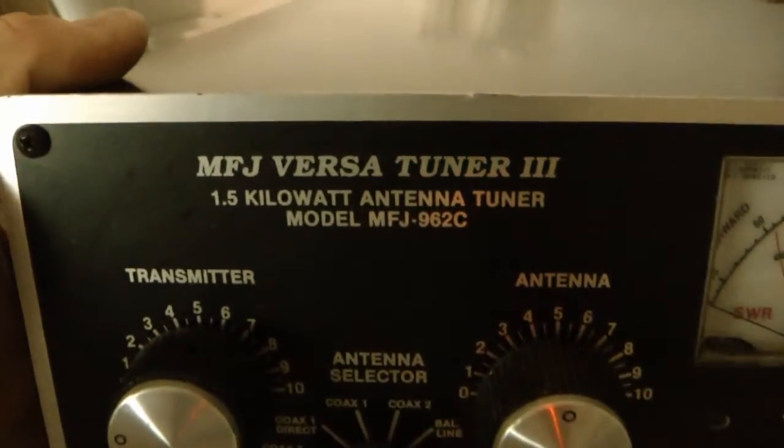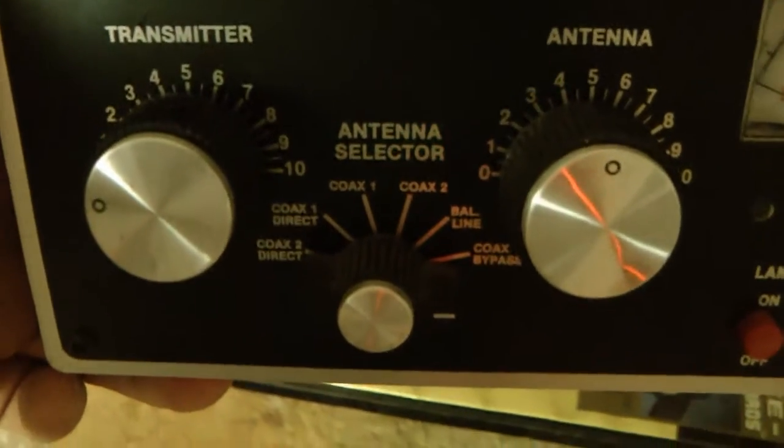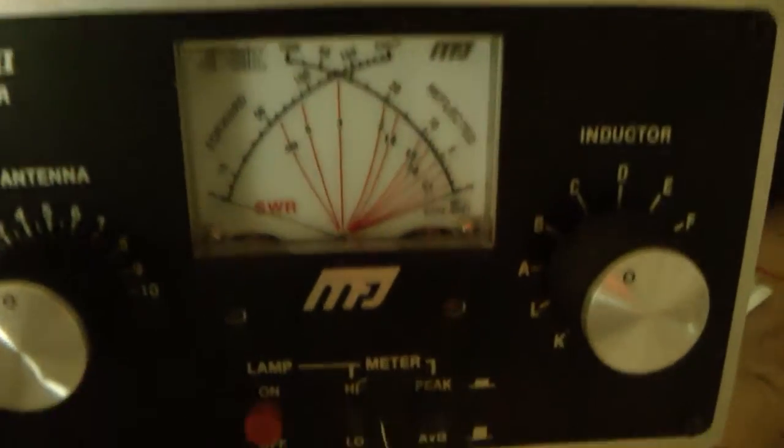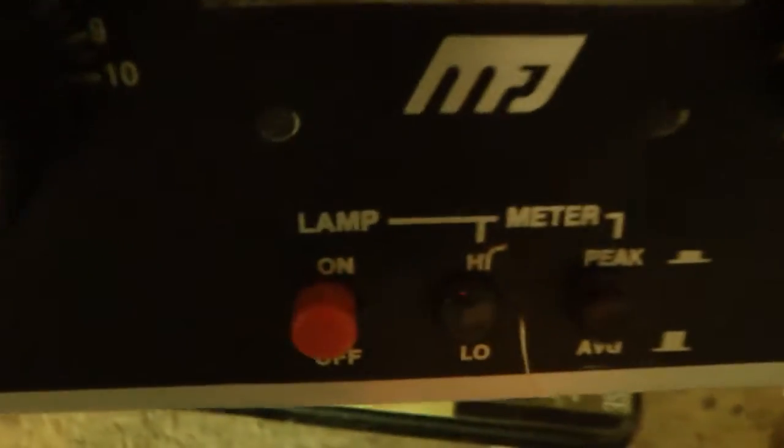This model MFJ-962C, as you can see, has the transmitter antenna selection, a nice meter, and indicators including a lamp, peak, and high-low.